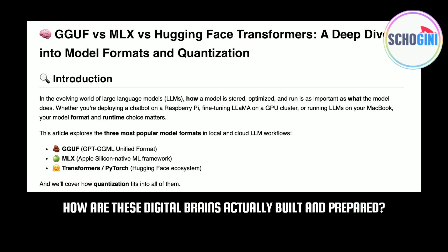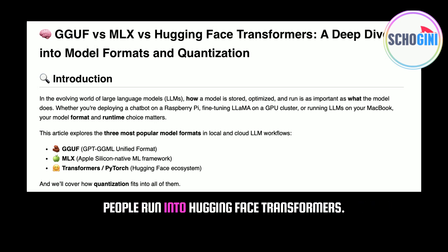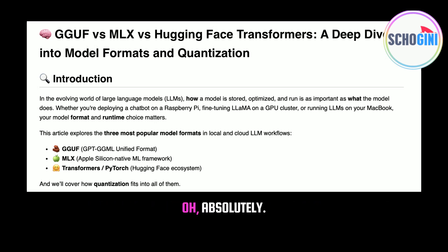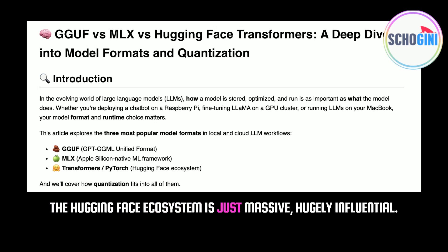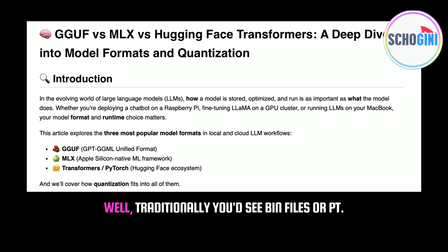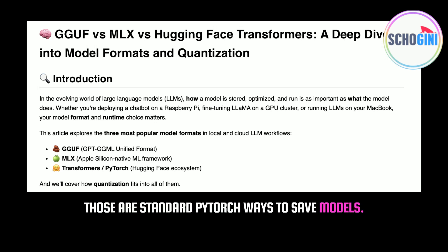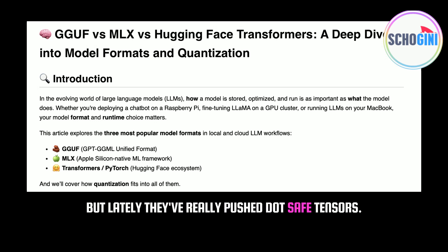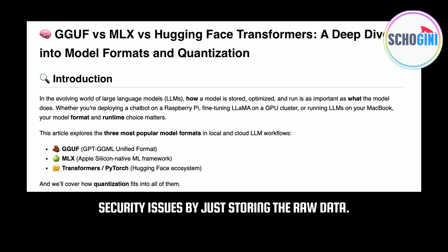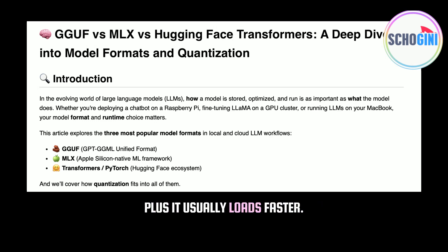Let's kick things off with probably the most common one people run into: Hugging Face Transformers. It's kind of the default standard now. The Hugging Face ecosystem is just massive, hugely influential. In terms of the actual files, traditionally you'd see .bin files or .pt — those are standard PyTorch ways to save models. But lately, they've really pushed .safetensors. It's considered safer; it avoids some potential security issues by just storing the raw data, no weird code execution possibilities. Plus, it usually loads faster.